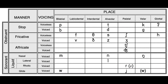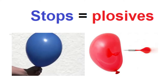There are seven plosive sounds: pa, ba, ta, da, ka, ga, and the glottal stop. Plosives are all produced by the same method: stop the air and then pop the air.